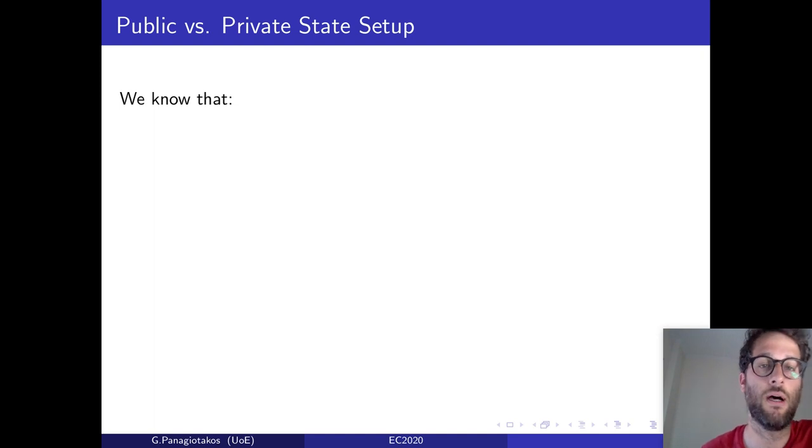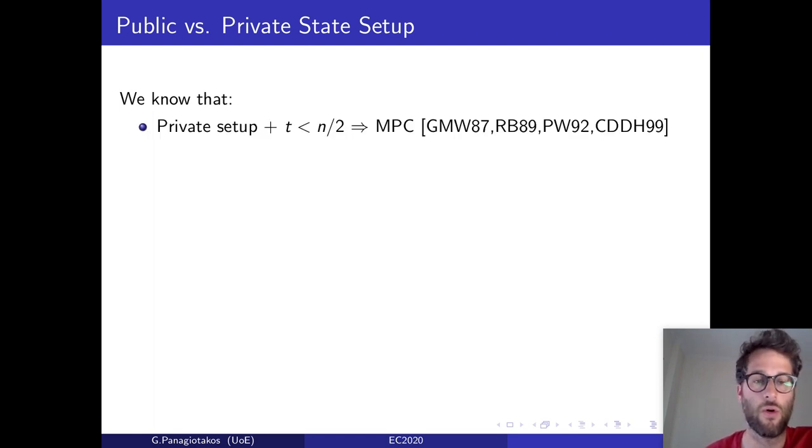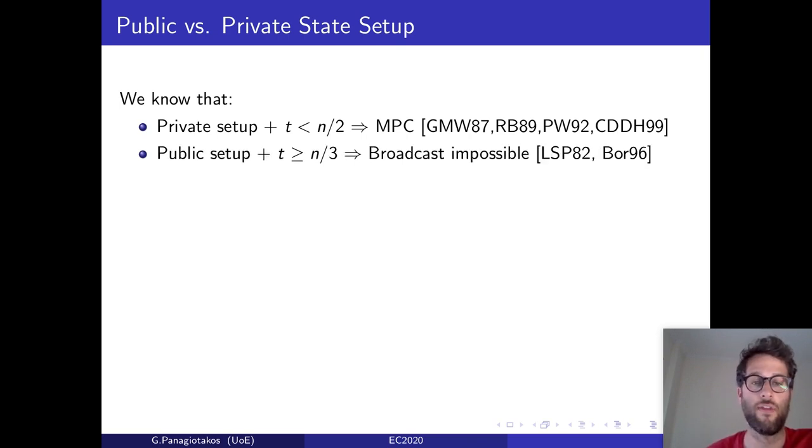This distinction between public state setup and private state setup was further highlighted in the MPC literature. First, we know that assuming a private setup and that the majority of the parties is honest, MPC is possible. On the other hand, assuming a public state setup and that one-third of the parties can be corrupted, it has been shown first that broadcast is impossible by a paper from Pfitzmann and Waidner in 1996, and since fully secure MPC implies broadcast, MPC is also impossible in this setting.